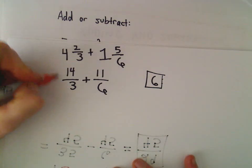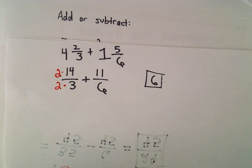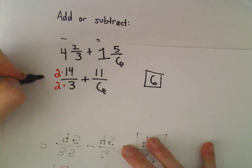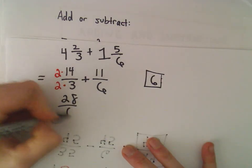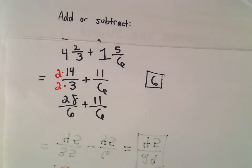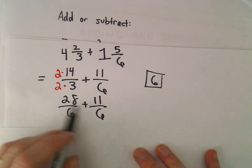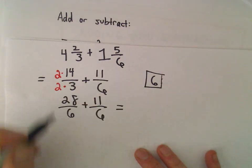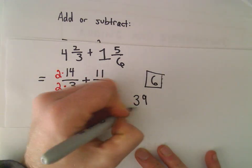So what we can do is we can multiply top and bottom of our first fraction by 2. That will make a denominator of 6 appear. So we'll get 28 over 6 plus 11 over 6. Well, 28 plus 11 is going to give us 39 over 6.